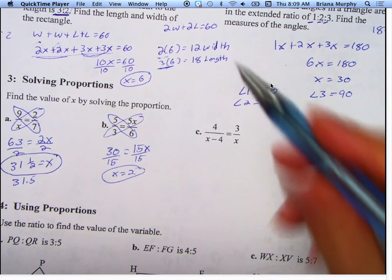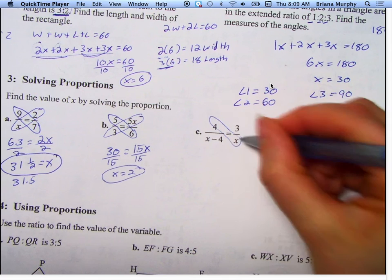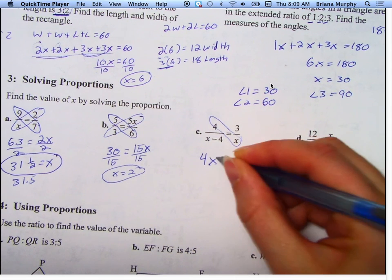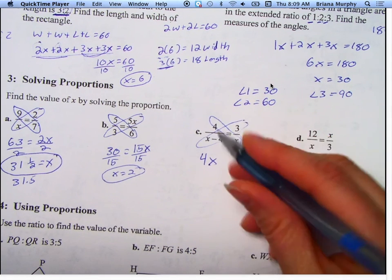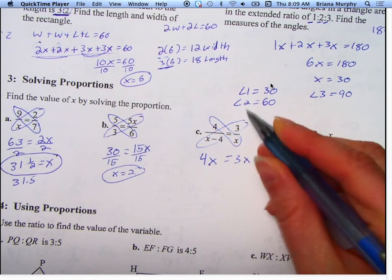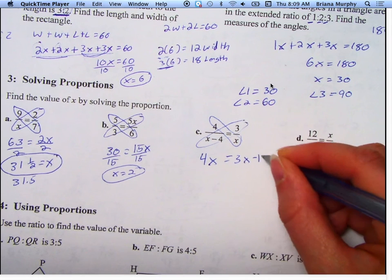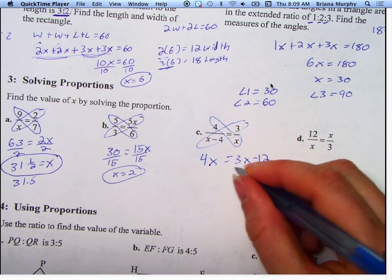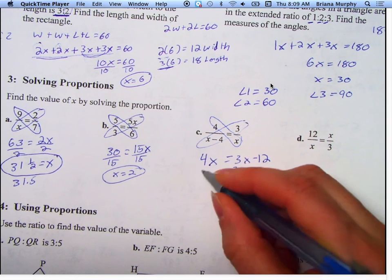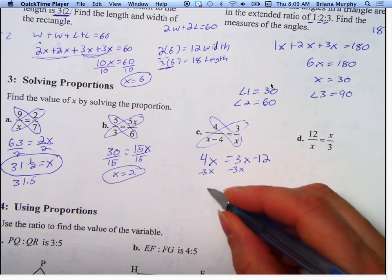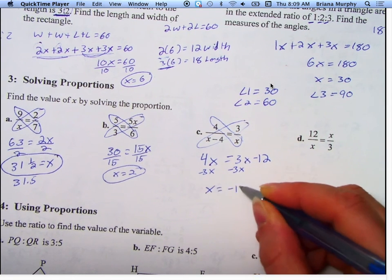Okay, you ready? 4 times X is just 4X, 3 times X is 3X, 3 times 4 is 12. Now I'm going to subtract 3X from both sides, and that just gives me X equals negative 12.